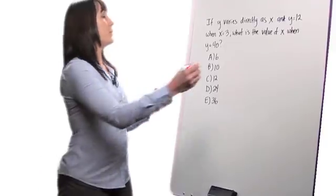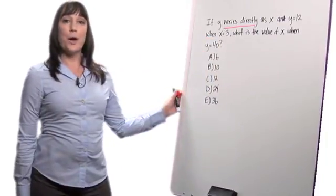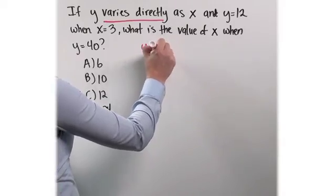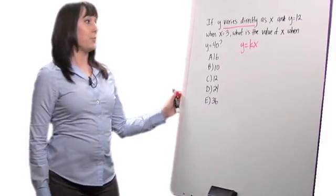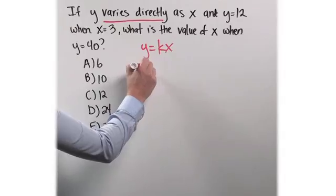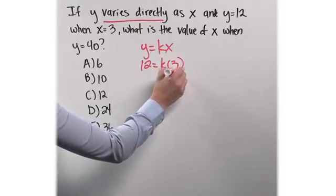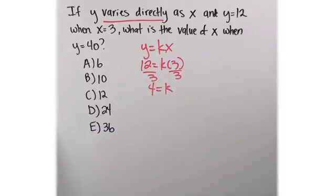Because I see the words varies directly, I'm going to use my direct variation formula. So I write down y equals kx. Now, I plug in my first set of numbers. y equals 12 when x equals 3. So I divide both sides by 3 and I get 4 is equal to k.